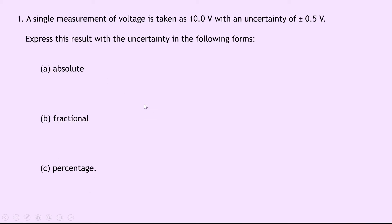So remember in absolute form all we do is we take our number plus or minus the uncertainty. So we take 10.0 plus or minus 0.5, put them in brackets, and put volts after it, and that way we don't have to write volts twice.